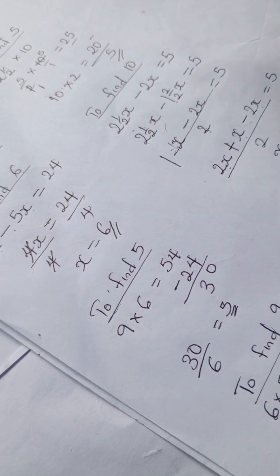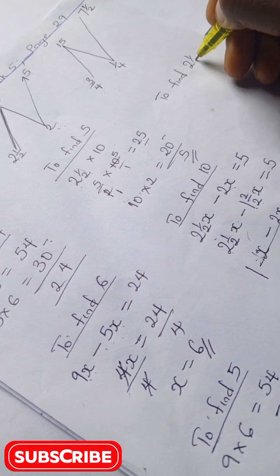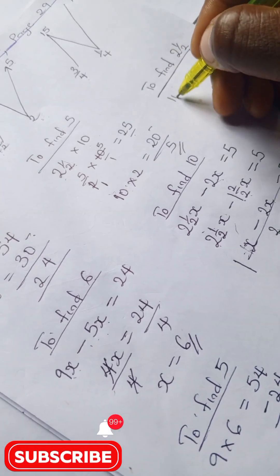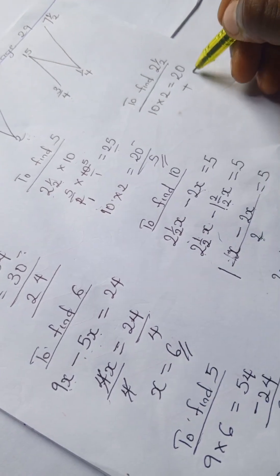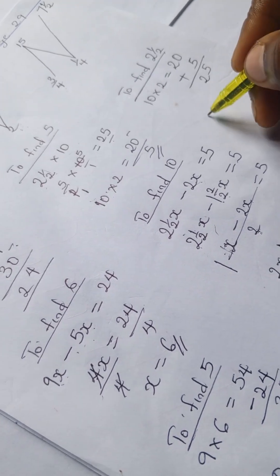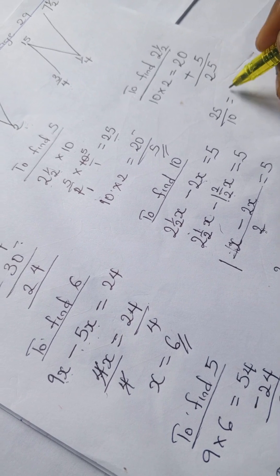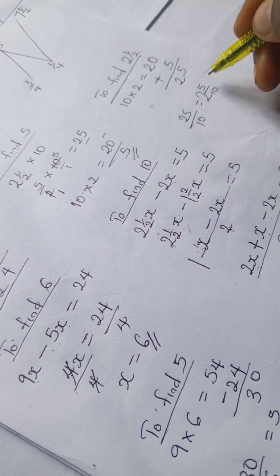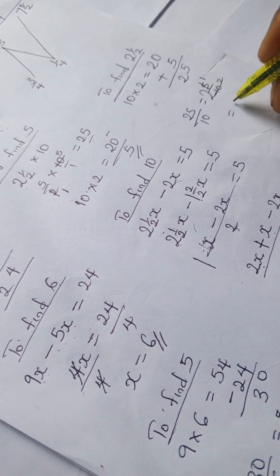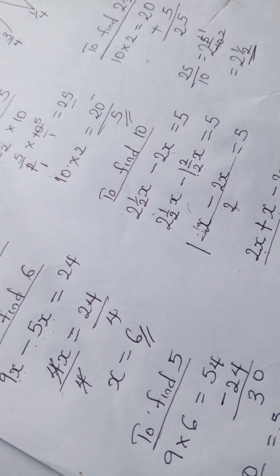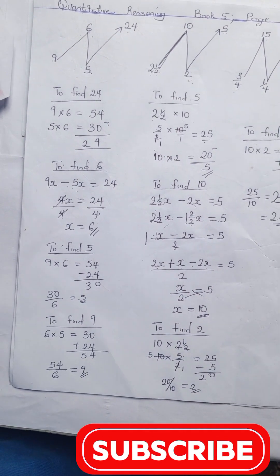We still have one more figure to find: 2 and 1/2. We have 10 times 2 equals 20, then 20 plus 5 is 25. So 25 divided by 10 gives us 2 and 5/10. Reducing 5/10 to lowest terms: 5 divided by 5 is 1, and 10 divided by 5 is 2, so we get 2 and 1/2. That's it for this problem. Do well to like and subscribe for more quantitative reasoning solutions and mathematics problems. Bye!